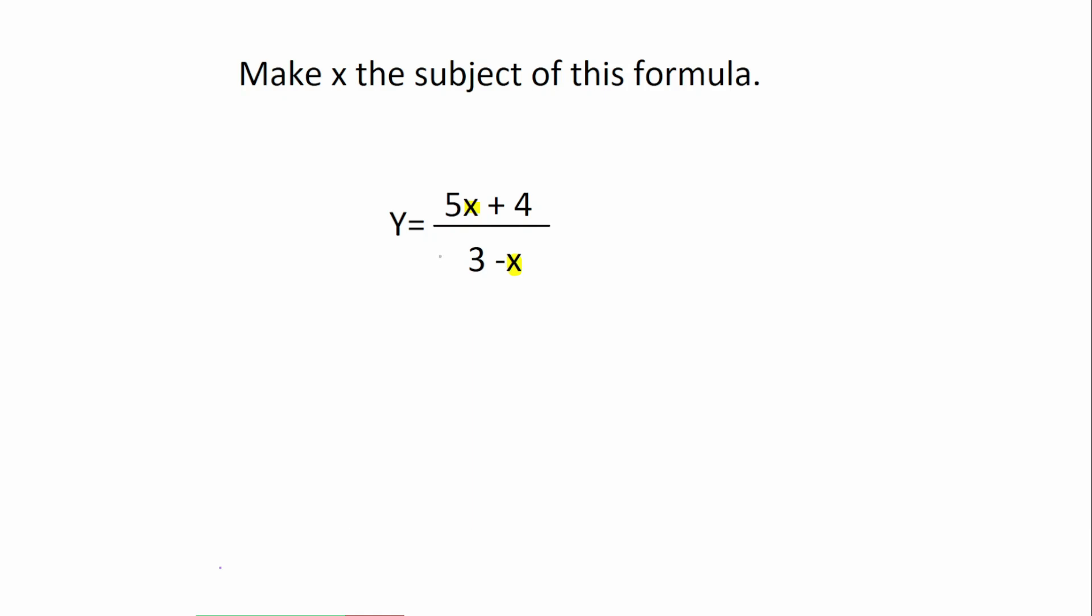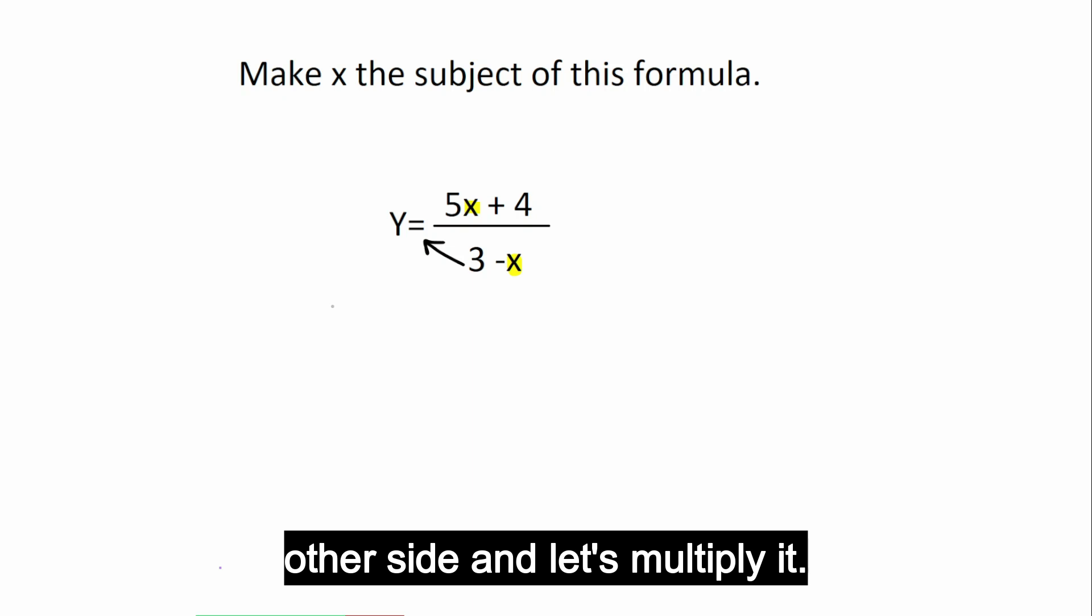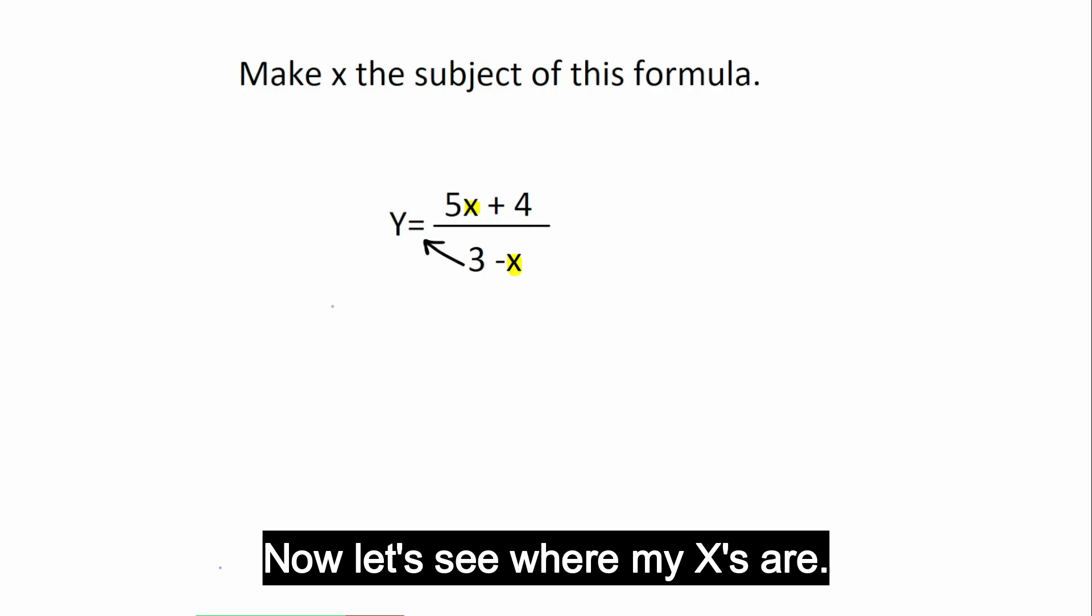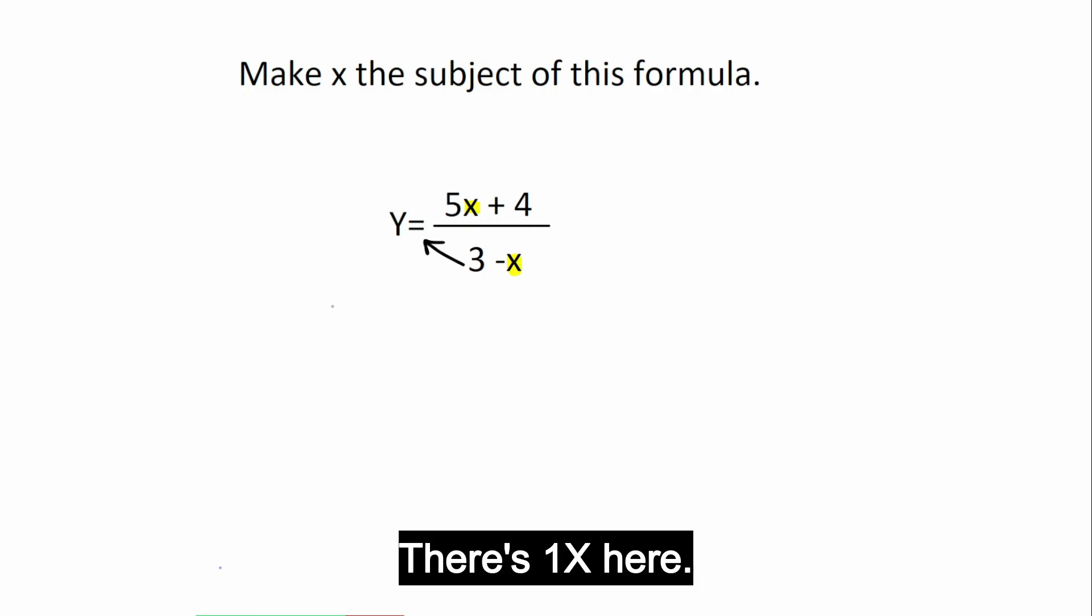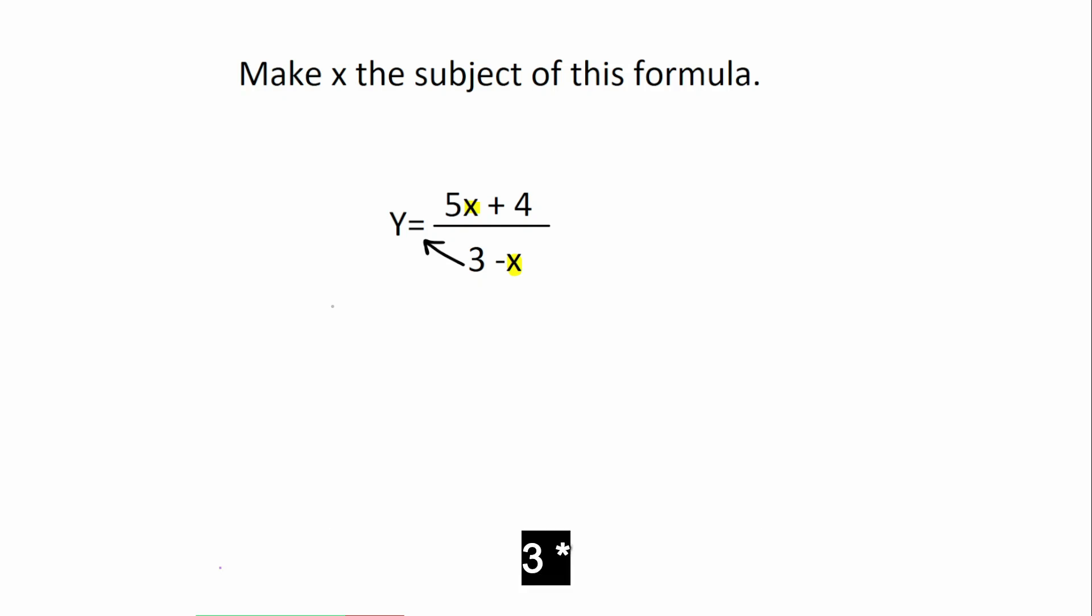Step 1, we are going to bring this to the other side and multiply it. So, y open bracket, 3 take away x is equal to 5x and 4. Now, let's see where my x's are. There's one x here, there's one x here. Now obviously I have to multiply out the brackets. Let's do that.